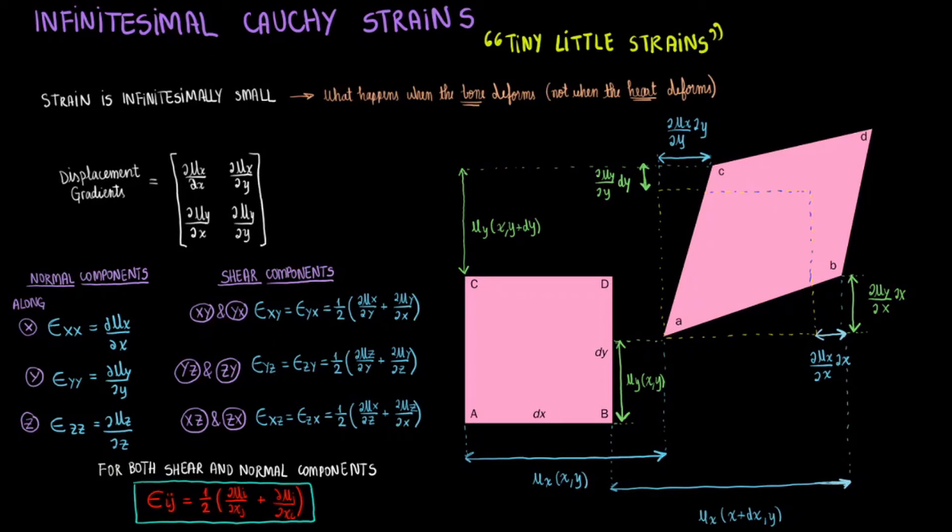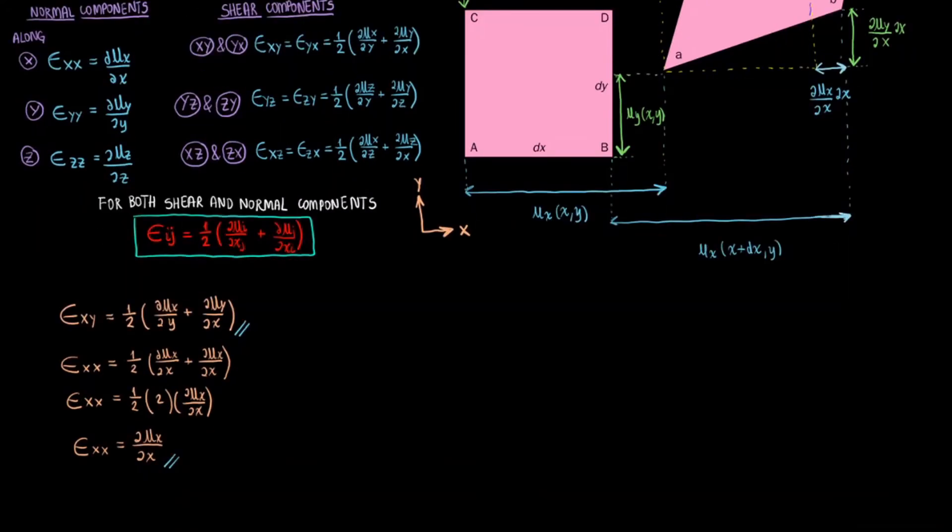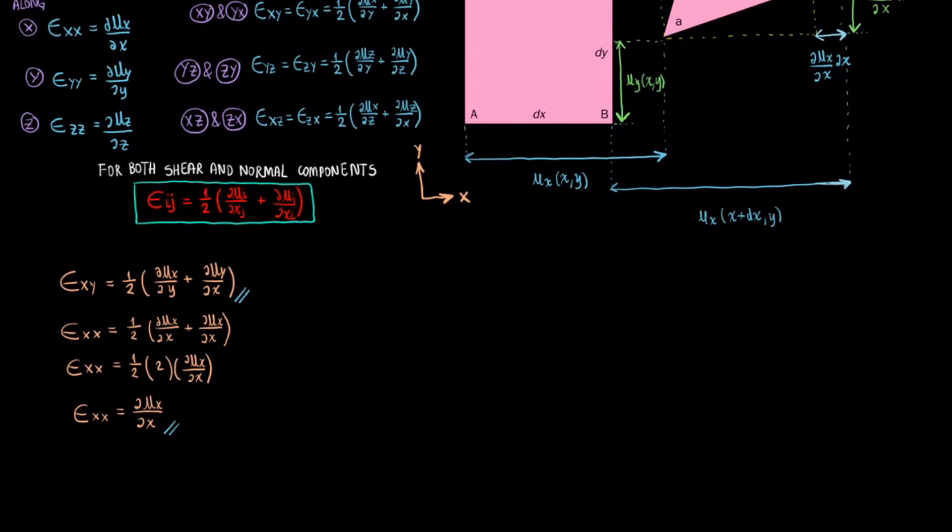But notice also that if you were trying to find exx, you would get exx equals one-half dux divided by dx plus dux divided by dx. But notice that this simplifies into simply dux divided by dx, which is the same answer we got earlier.